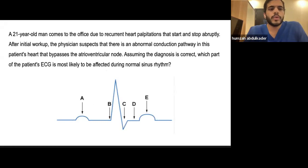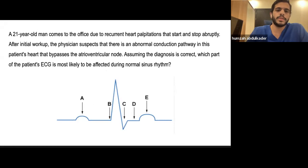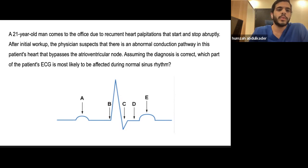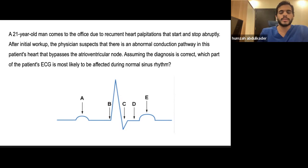A 20-year-old man comes to the office due to recurrent heart palpitations that start and stop abruptly. After initial workup, the physician suspects there is an abnormal conduction pathway in this patient's heart that bypasses the atrioventricular node. Assuming the diagnosis is correct, which part of the patient's ECG is most likely to be affected during normal sinus rhythm?